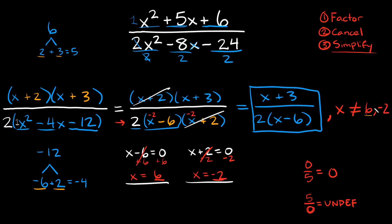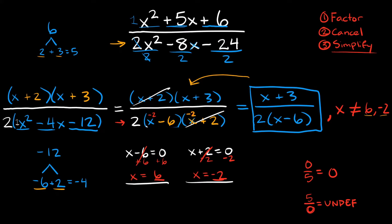One last thing to point out: our two excluded values are 6 and negative 2. If we plug negative 2 into our simplified answer, we get negative 2 minus 6 equals negative 8, and negative 8 times 2 equals negative 16 — you can totally have negative 16 in your denominator. But our simplified answer doesn't show the whole picture. Looking at the original factored form, x plus 2 is a factor in the denominator, and plugging in negative 2 makes that equal 0. So you have to take a step back and look at all the factors that were on the bottom — your simplified answer is too simplified.